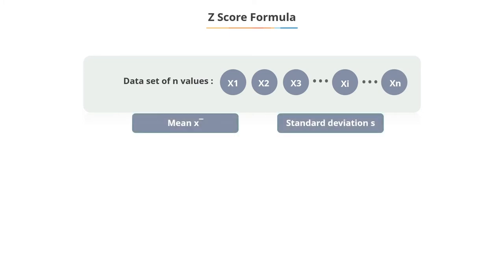Suppose a data set consists of n values x1, x2, x3, xj, up to xn with mean x-bar and standard deviation s. Then the standard score of the j-th value in the data set is obtained by Zj equals xj minus x-bar divided by s.